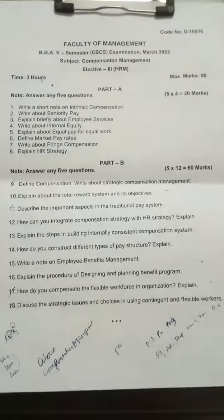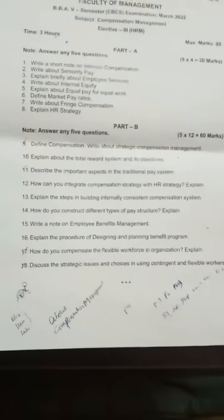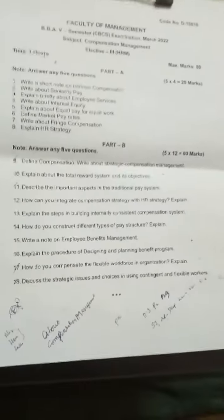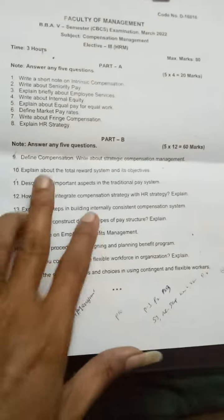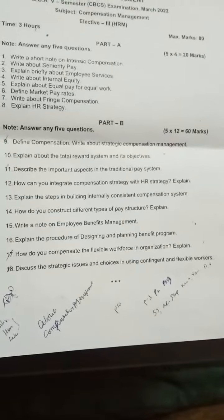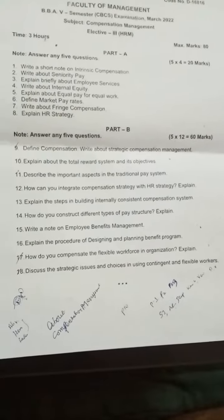HR strategy is a repeated after question. Discuss strategic issues and choices in using contingent and flexible workers — this is the question in unit number five. From unit number one, one question is there: write about strategic compensation management, or explain about the total reward system and its objectives.